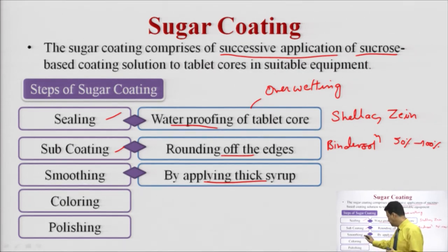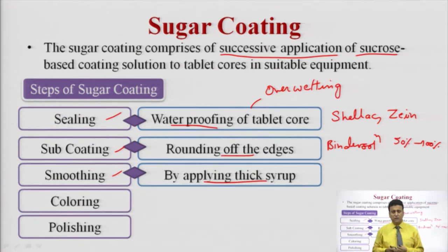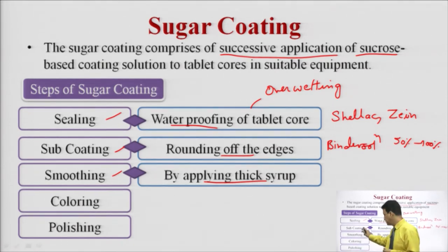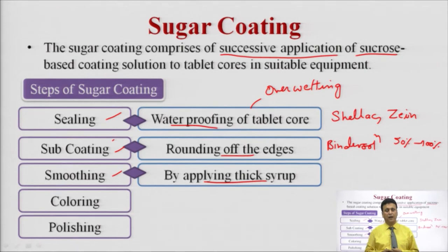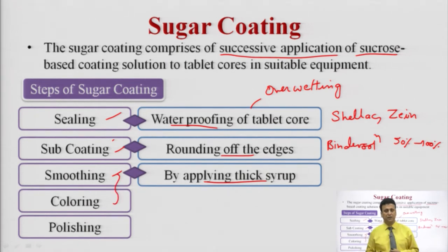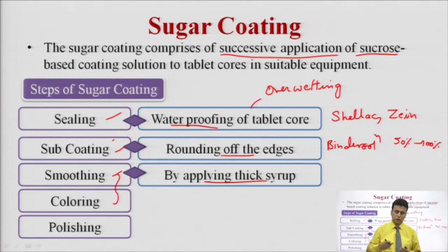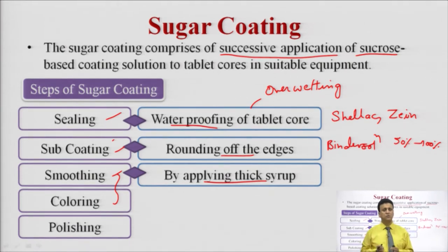Next is the smoothing step. We apply a thick syrup solution for the smoothing effect. This step is done to remove or rectify the imperfections formed during subcoating. We use sucrose syrup for this. We can also do the coloring step simultaneously with the smoothing effect — in doono steps ko ek saath bhi kiya ja sakta hai, ya alag alag bhi. Pehle smoothing karainge by using a thick coating of sugar syrup, and after that we can apply a color solution in sugar syrup.